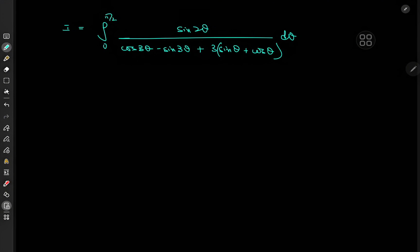Charlie was playing around with the folium of Descartes, trying to model the area bound by the closed loop in the curve, and that's how he came up with this integral — and I think this is an absolute treat to solve. We're interested in the integral from zero to π/2 of sin(2θ) over cos(3θ) minus sin(3θ) plus 3sinθ plus cosθ.